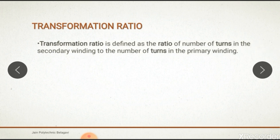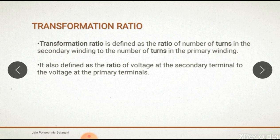The transformation ratio is defined as the ratio of number of turns in the secondary winding to the number of turns in the primary winding. It is also defined as the ratio of voltage at the secondary terminal to the voltage at the terminals of primary.